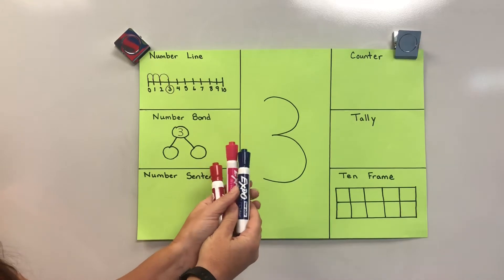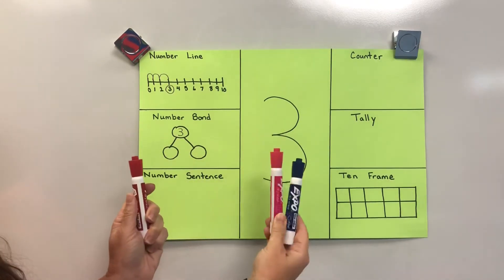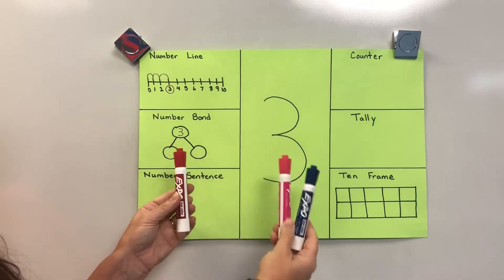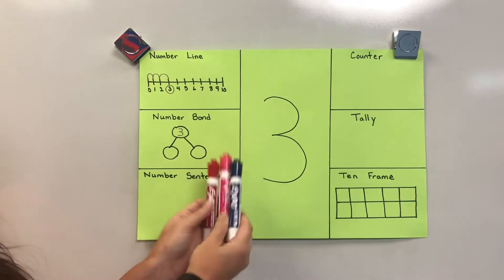Now I can split these up, one over here and two over here. One and two, when you put them together, makes three.